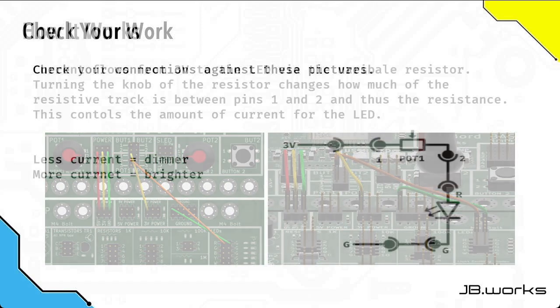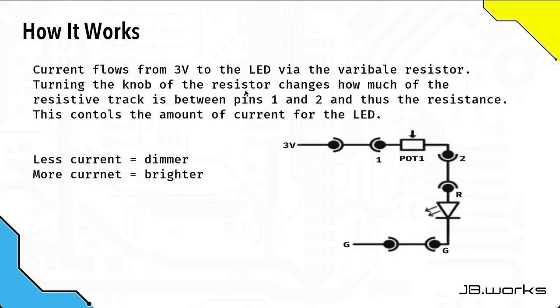And finally let's just have a quick review of how this works so essentially current flows from the three volt power supply here through the first jumper which is the yellow jumper through the variable resistor which is part number one and it's going through pins one and two and so as you turn the knob you're changing the resistance of this variable resistor which changes the amount of resistance that the current encounters.